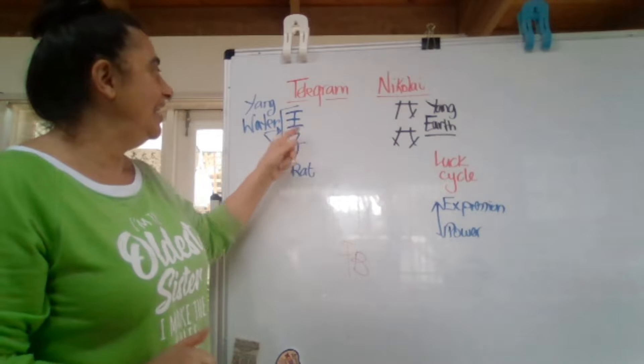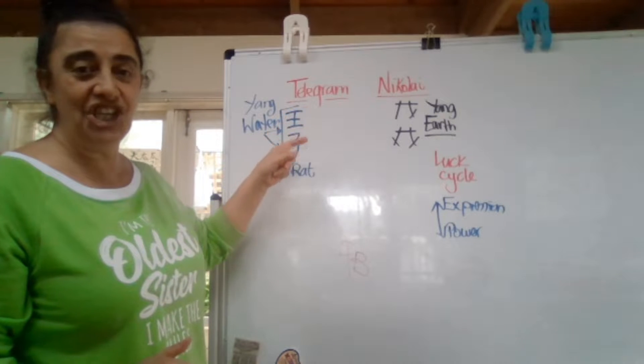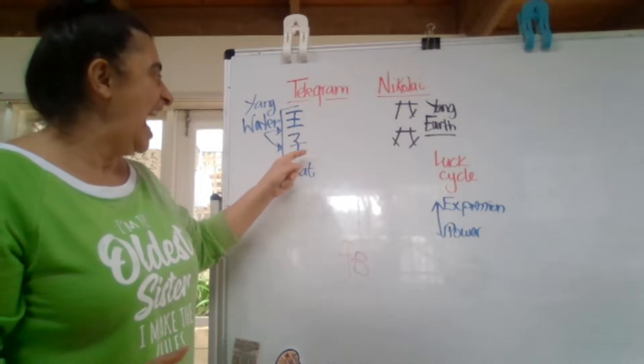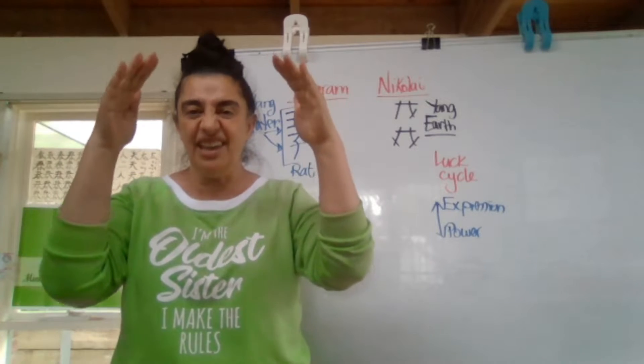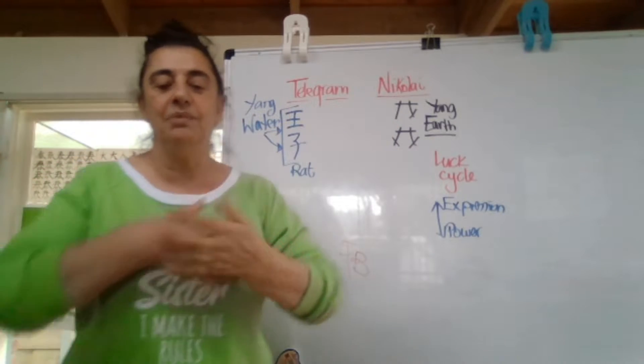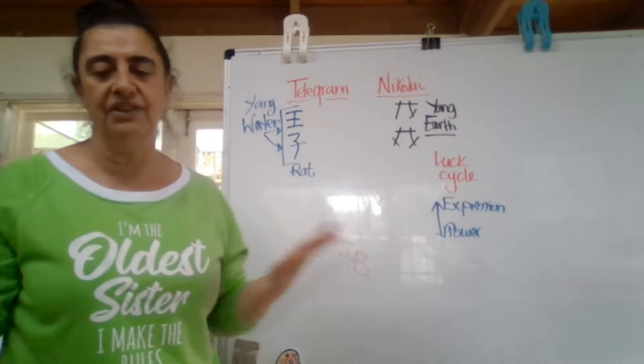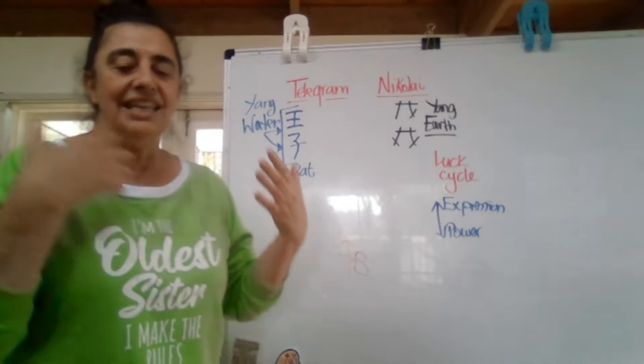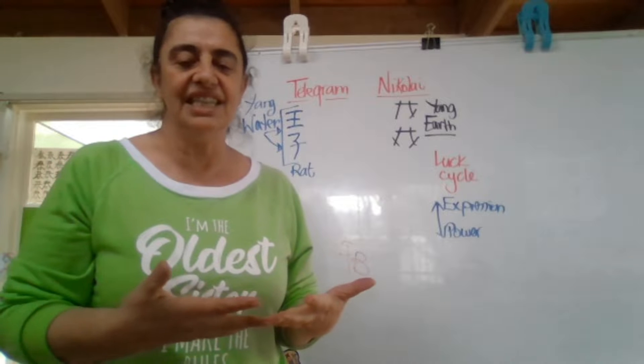So for him, for Nicola, this is ka-ching ka-ching ka-ching, and this is at its peak. So for him, I didn't do the other brother because he sold it, but this is different.